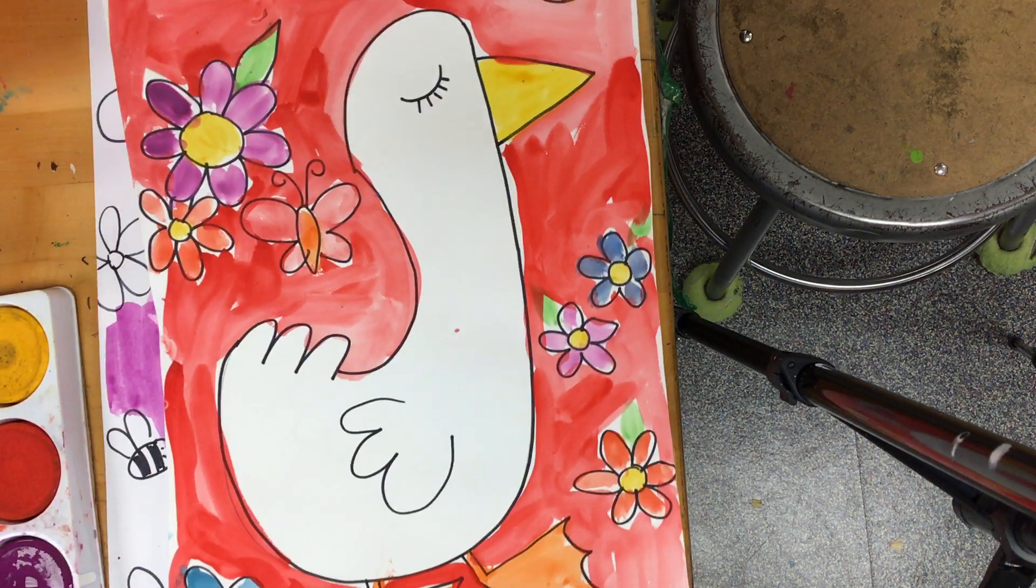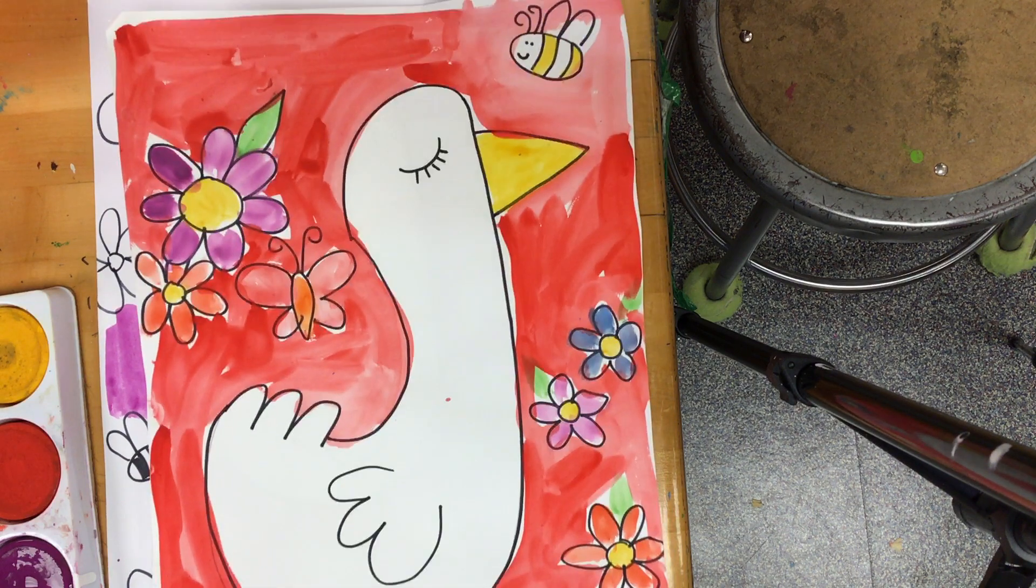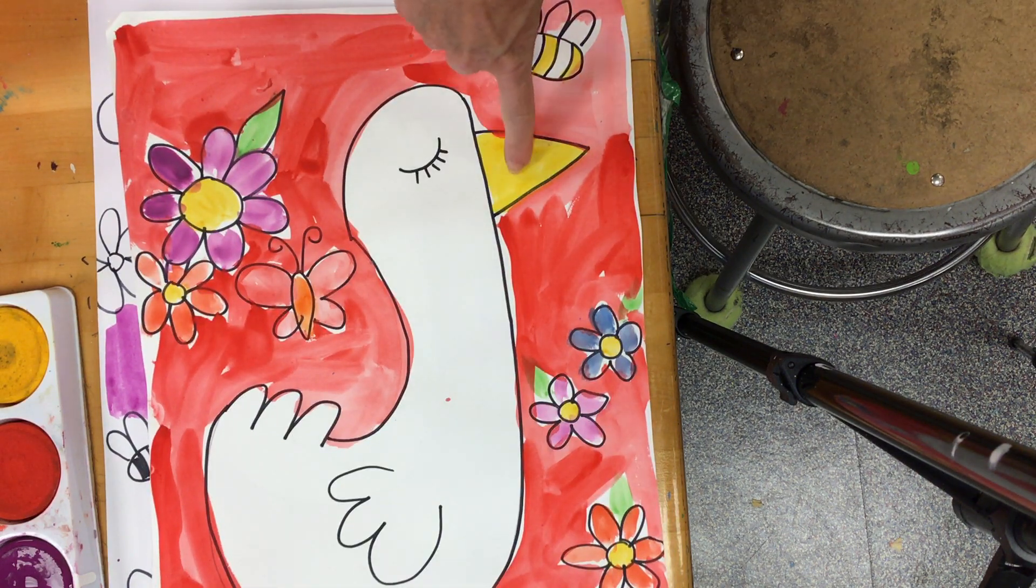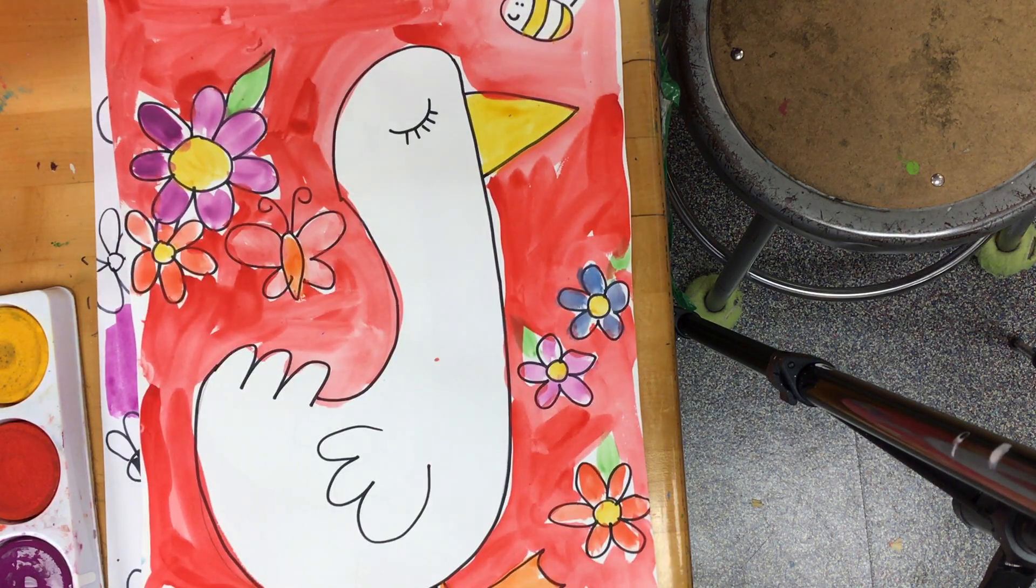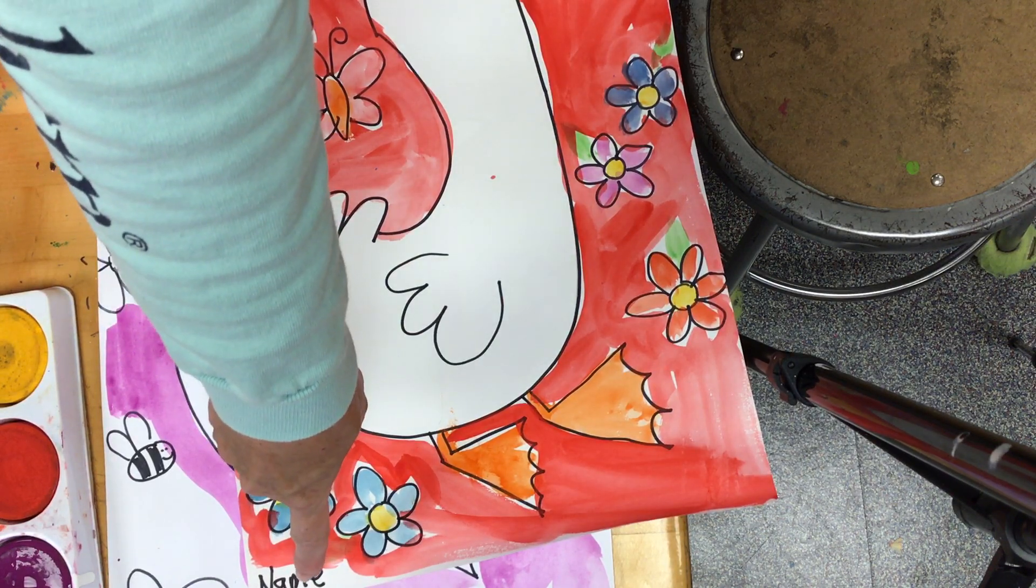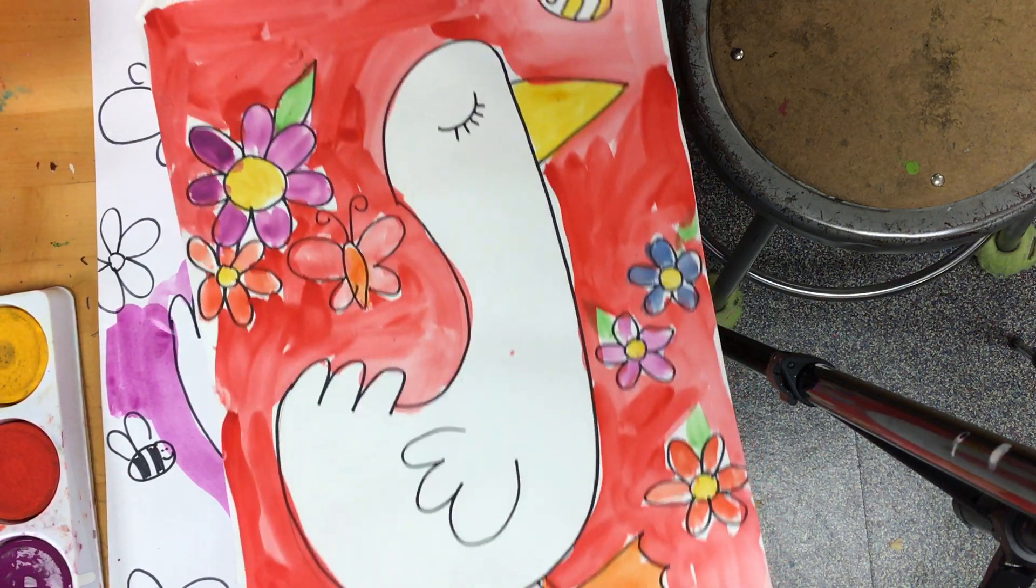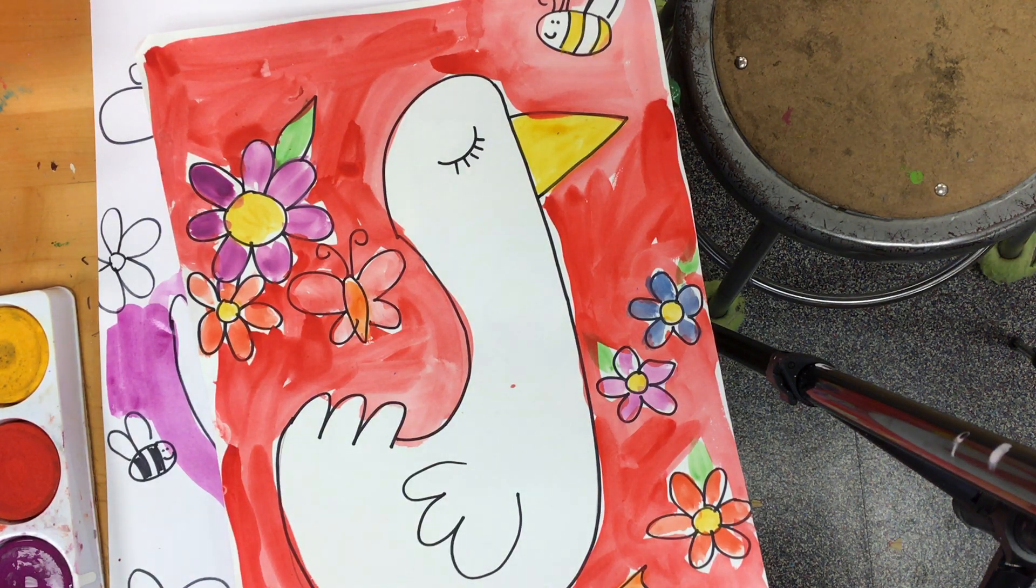When you're done with the background, you can go in and paint your flowers and your bees. Your duck's beak might be yellow or orange. And then you can use those other colors to paint the rest. Make sure you have your name on your project. And you are also going to want to make sure that you put it on the drying rack when you are done.